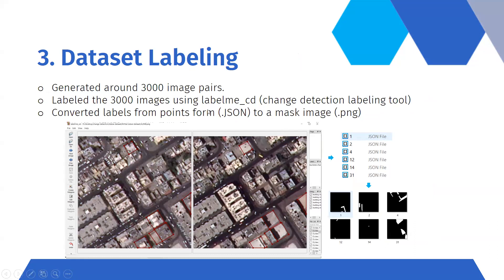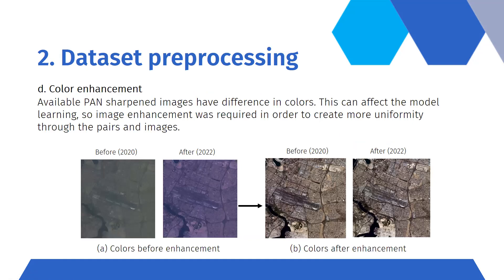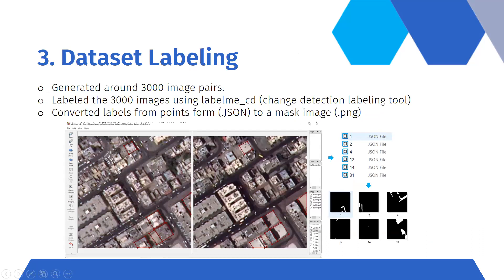That covers dataset pre-processing, which may sound short but actually involved a lot of work. With change detection, we're working with pairs of images that need exact location alignment, color uniformity, and as much consistency as possible — unlike typical deep learning models that handle a single image for object detection or classification. Any misalignment can produce wrong results in the model later.